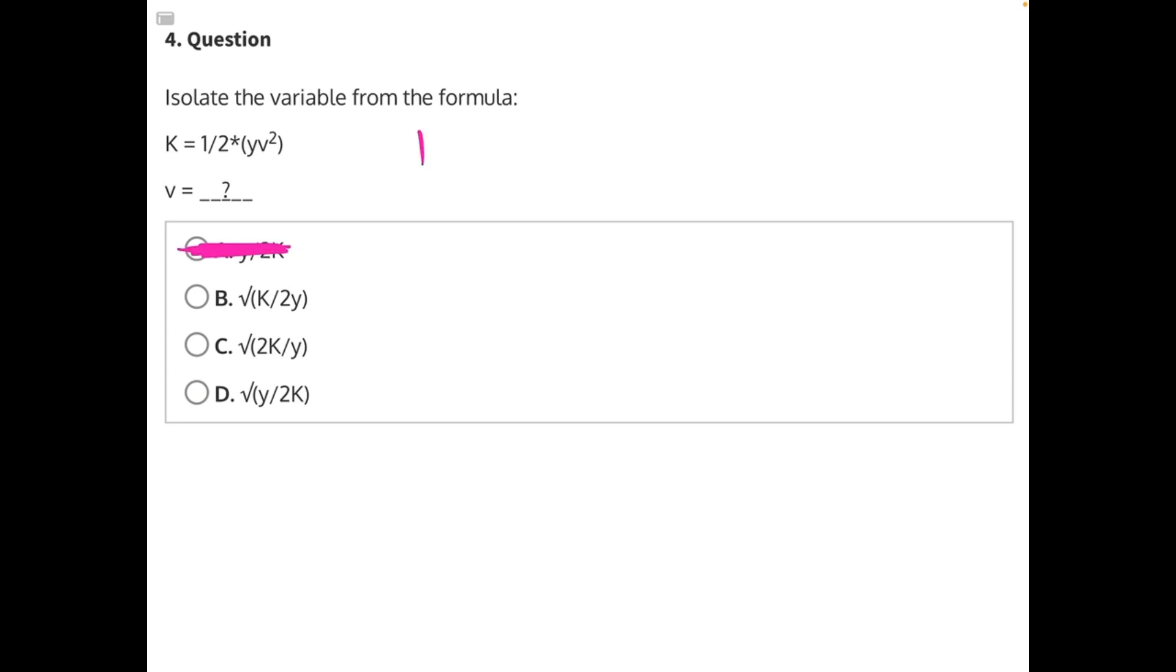Now let's begin to solve. k equals one-half times y v squared. We're trying to isolate v, but right now it's inside a set of parentheses, so we need to get rid of those first, and to do that we need to get rid of one-half. One-half is being multiplied to v, so the opposite operation of multiplication is division. We need to divide both sides by one-half. These one-halves will cancel.